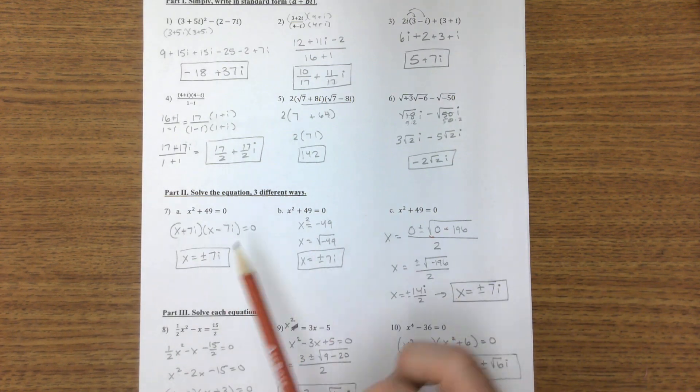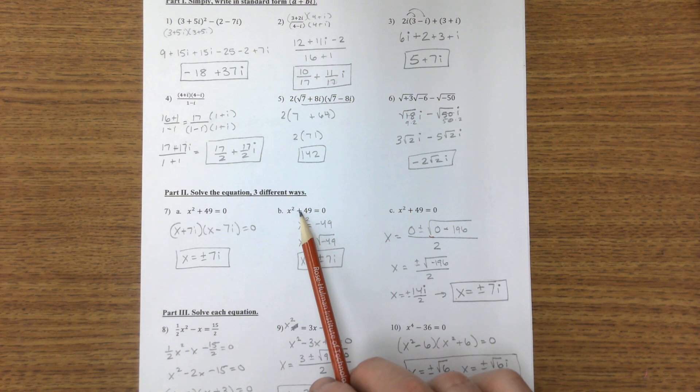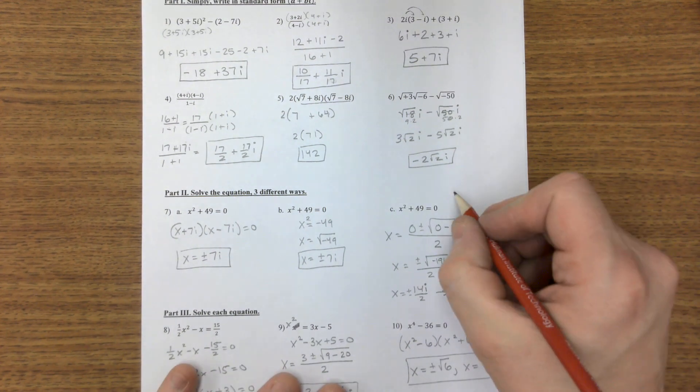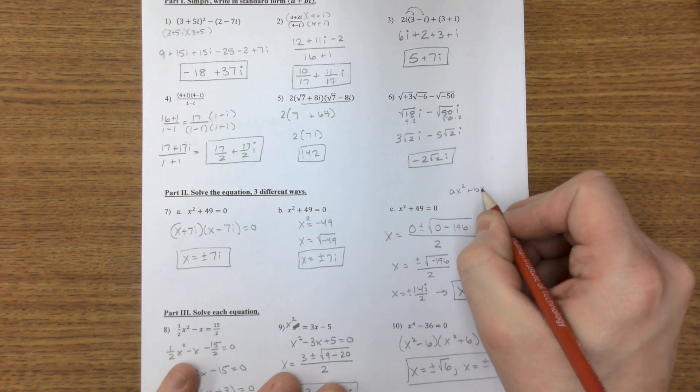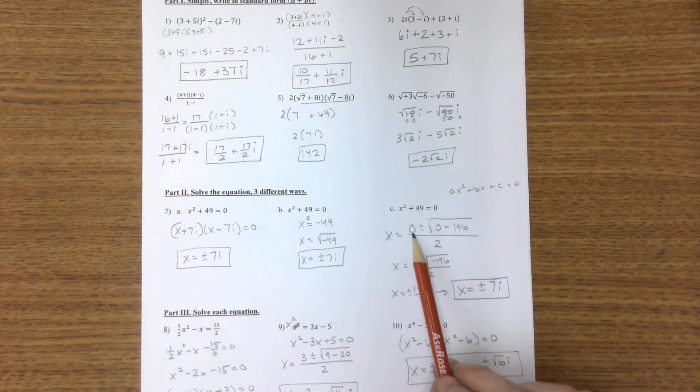Here, number three is solving this equation three ways: factoring, subtracting and taking the square root, and the quadratic formula. Remember, the quadratic formula is ax squared plus bx plus c equals zero. The b value is zero right there.